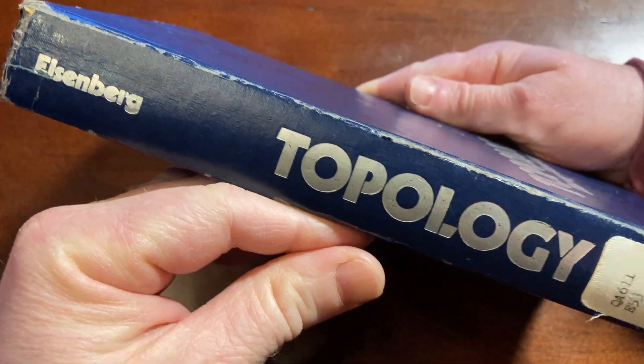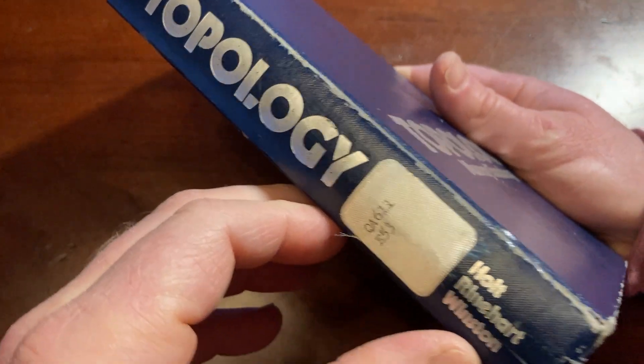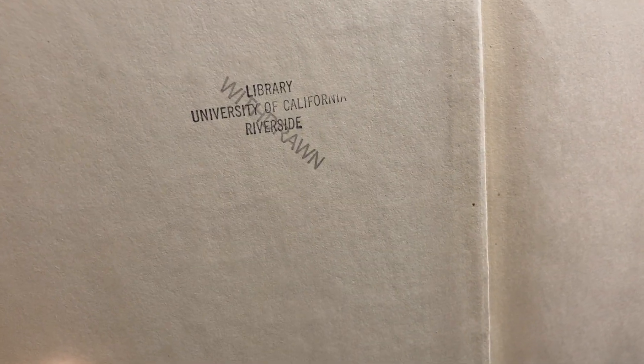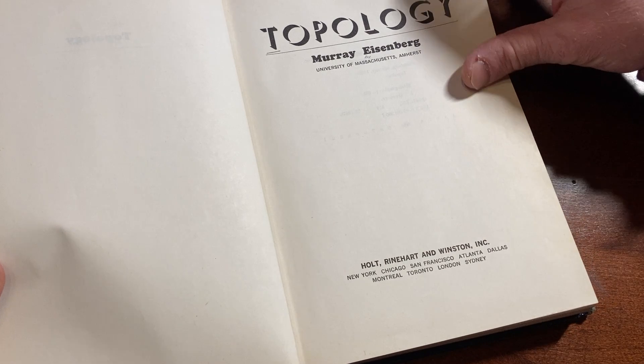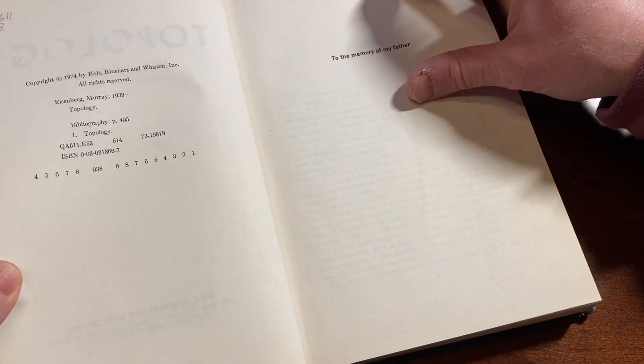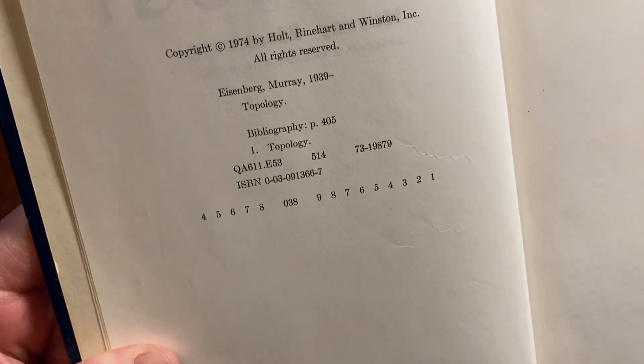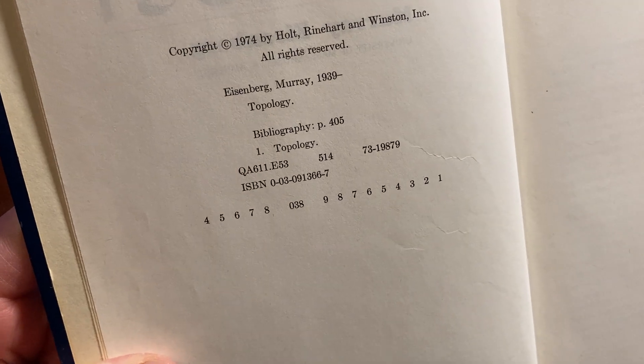This is an ex-library book, meaning that it used to belong to a library. It used to belong to the library at the University of California Riverside, and it's been withdrawn. Interesting. Topology, Murray Eisenberg. And this is meant to be an introductory book on topology. It's from 1974. Wow, that's a long time ago.